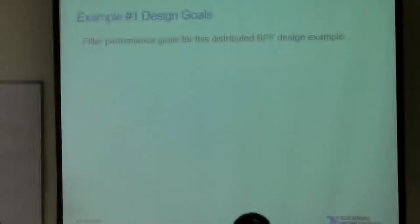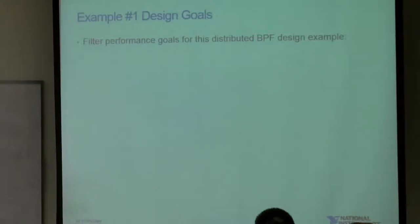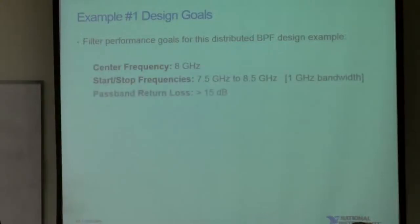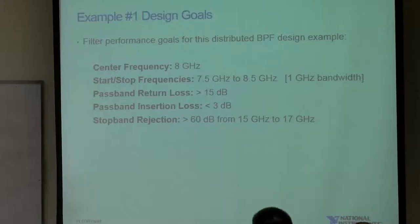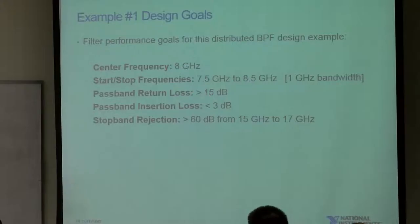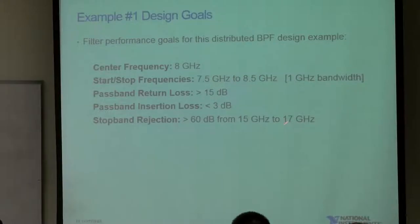As with any job, your manager will give you design goals. For our example: center frequency of 8 GHz with 1 GHz of bandwidth, so the passband ranges from 7.5 to 8.5 GHz. We're shooting for return loss within the band of 15 dB or better, insertion loss of less than 3 dB. We also want to reject any signals within the second harmonic range — twice the passband — better than 60 dB. These goals will gauge whether our design is working.